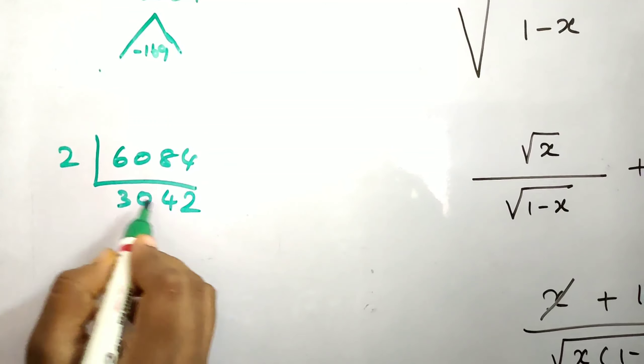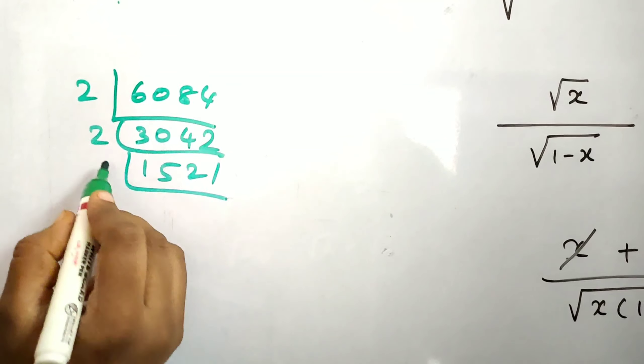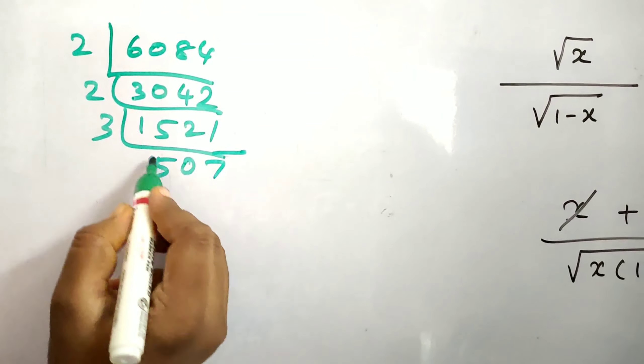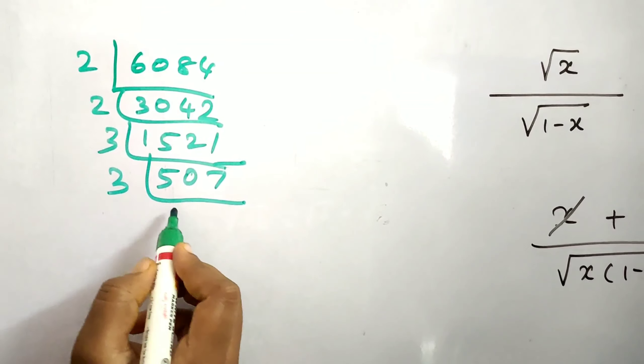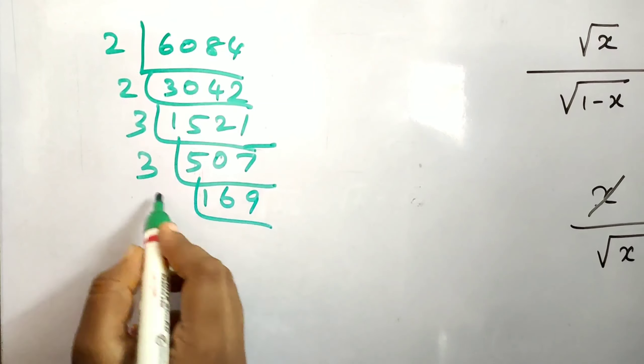6084, do prime factorization: 3042 by 2, again 2 gives 1521, then 3rd table, 5 3s are 15, 0, then 7 3s are 21. Again 3: 1 3s are 3 remainder 2, 6 3s are 18 remainder 2, giving 507. Then 13 times 13.